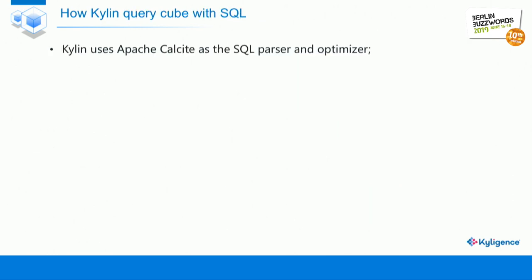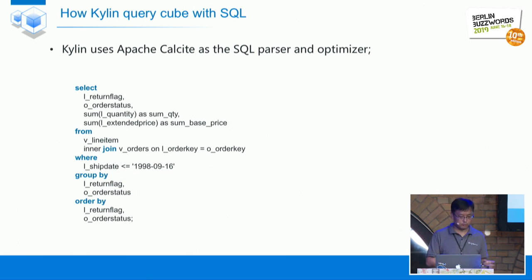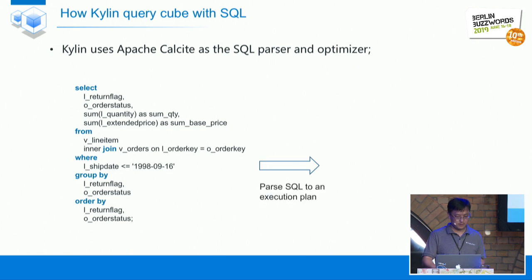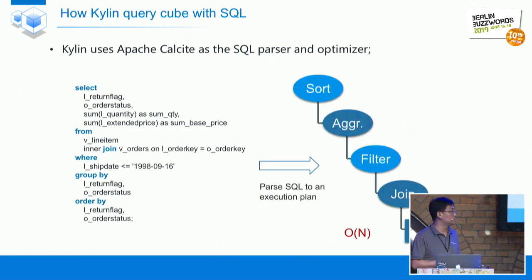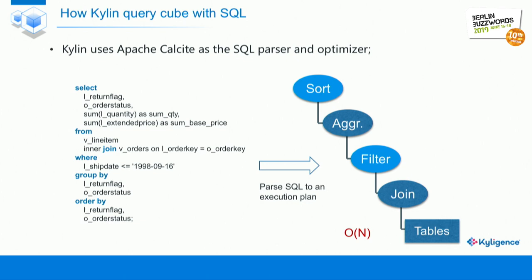How do we query the OLAP cubes? In Kylin, to make the system easy to use, we use SQL as the query language. Kylin integrates Apache Calcite as the SQL parser and optimizer. Here is an example of a typical OLAP query: it selects two dimensions and two metrics from two tables, with a filter condition and sorting. This query is first parsed into an execution plan that is executed from bottom to top.